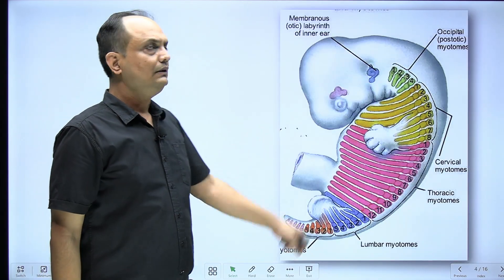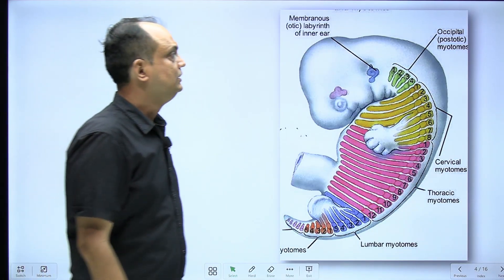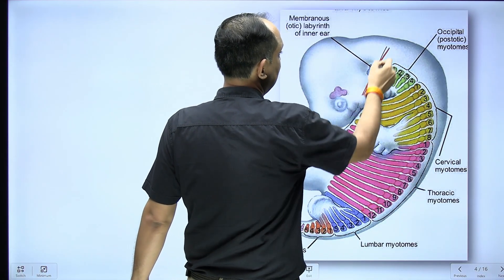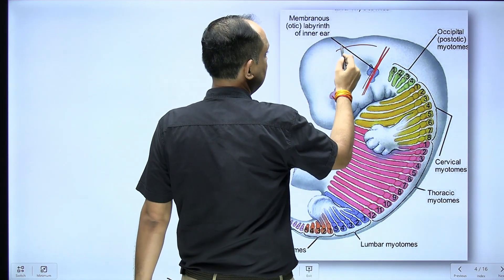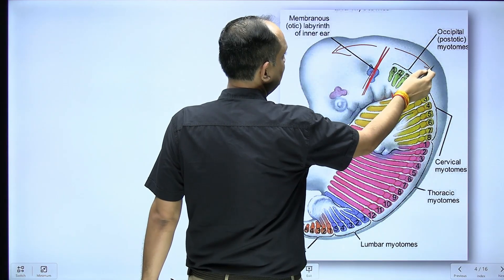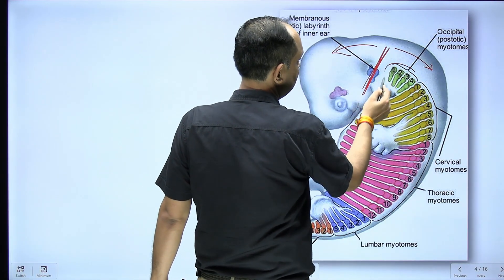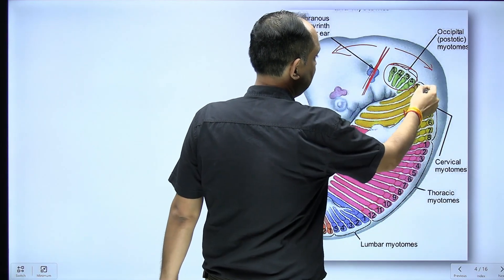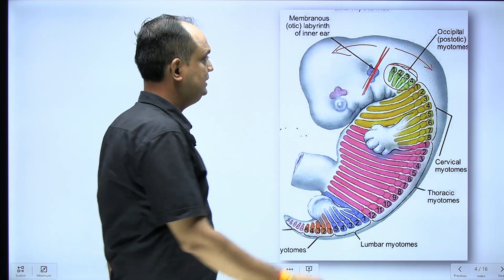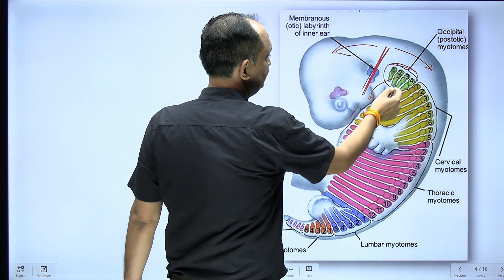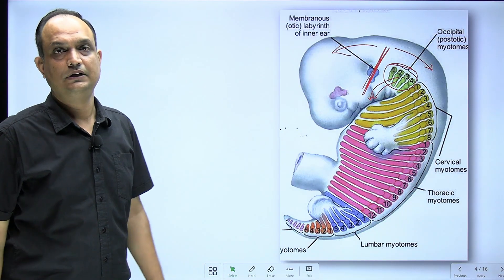Regarding the formation of the somites: the developing internal ear is a landmark — the area before it is pre-otic and behind is post-otic. In the post-otic part, occipital somites form and develop myotomes. These myotomes migrate from the occipital region into the first pharyngeal arch, where they will form the muscles of the tongue, pulling their nerve supply — the hypoglossal nerve — with them.